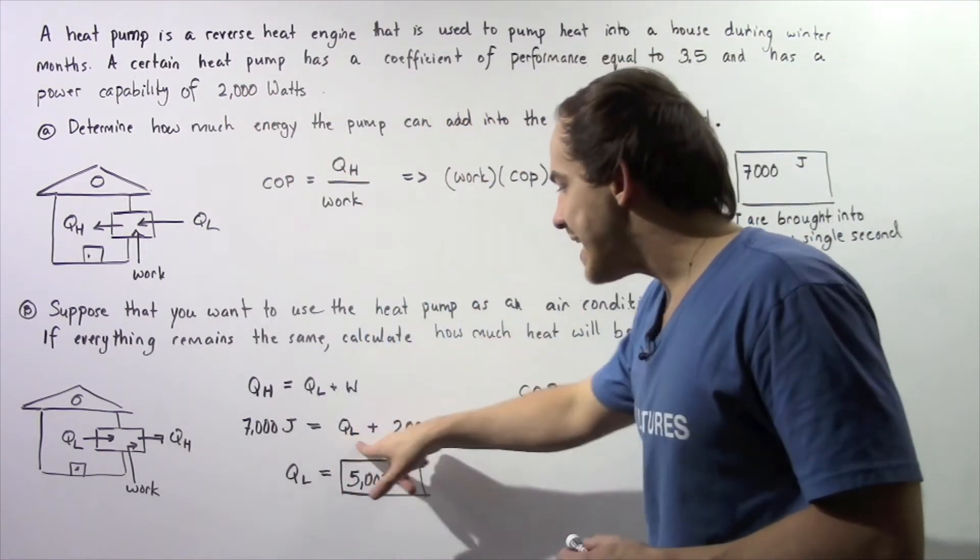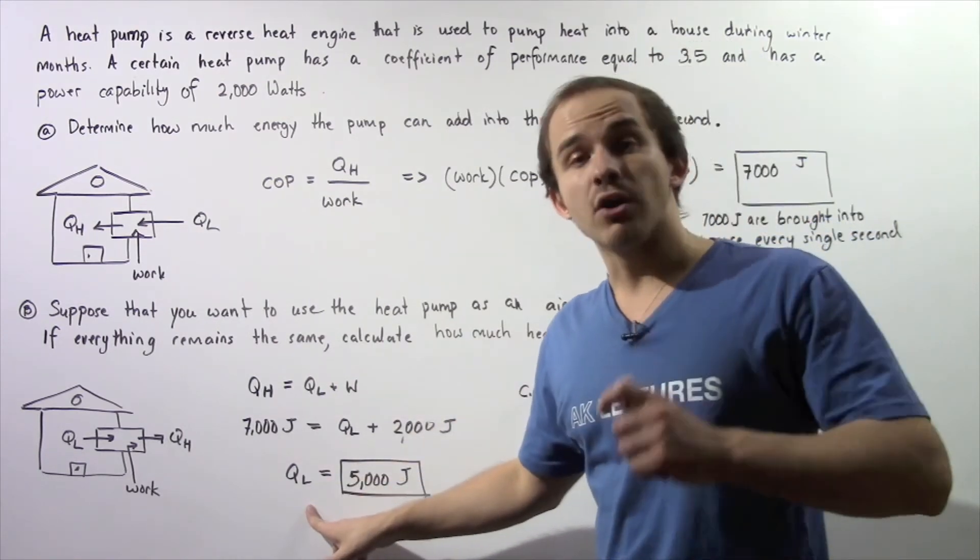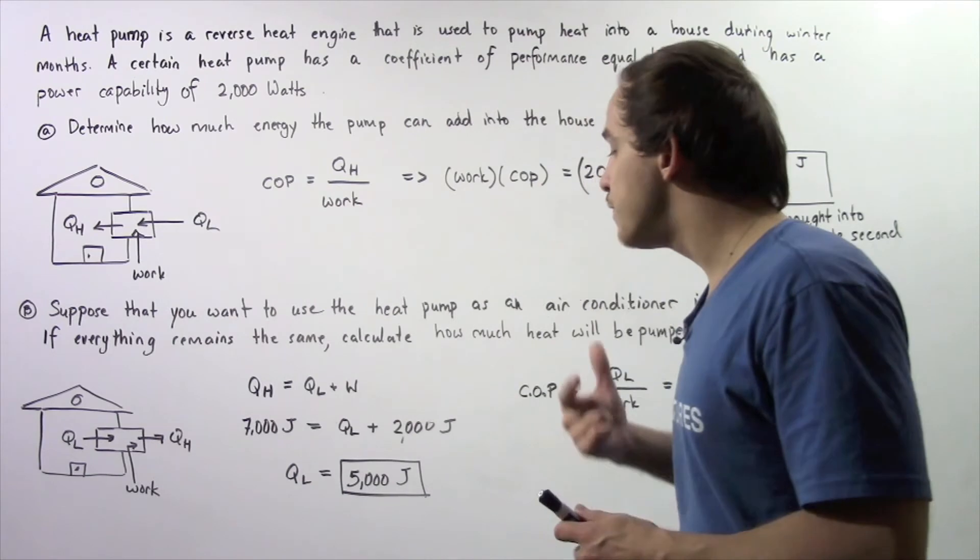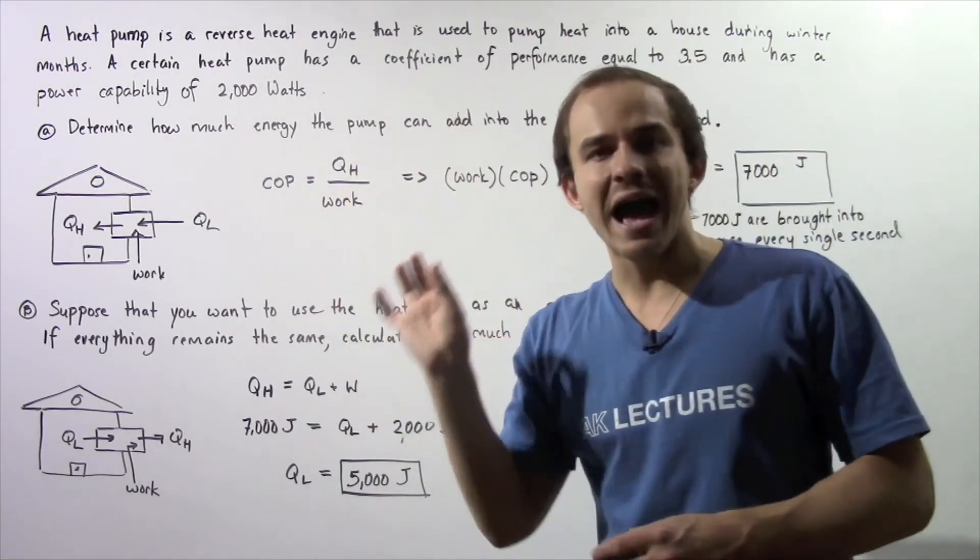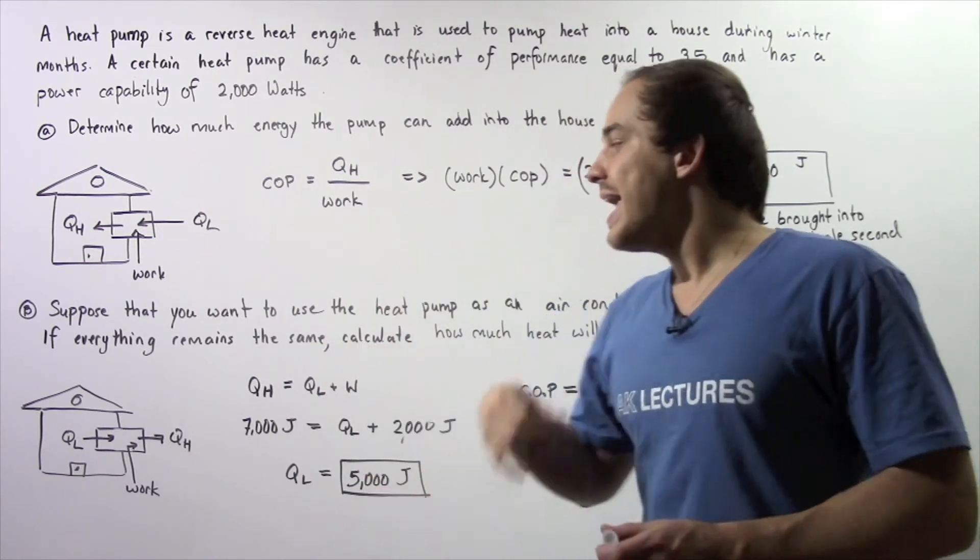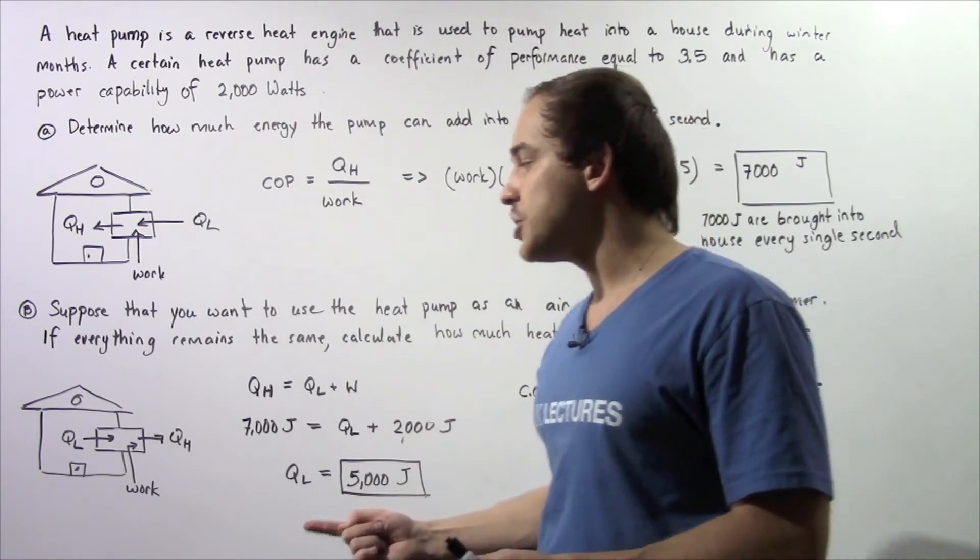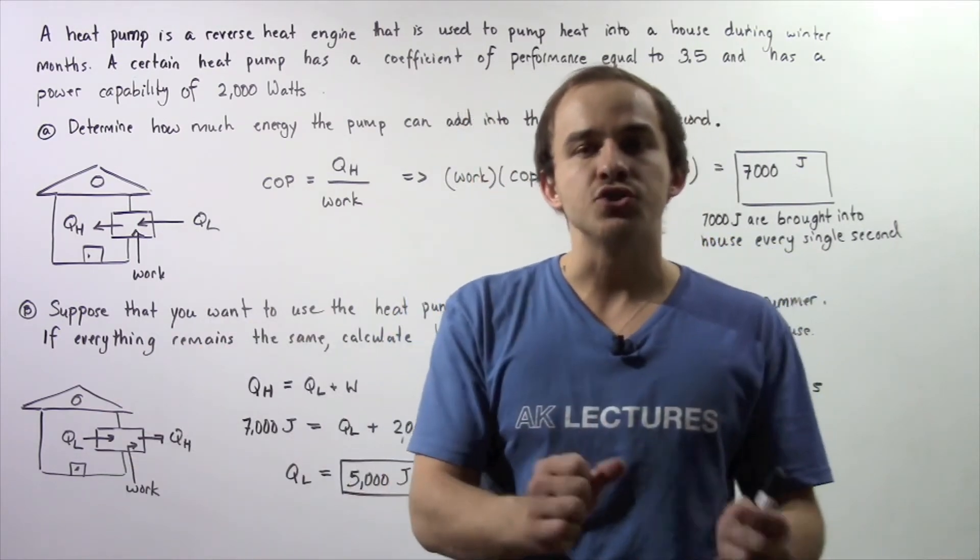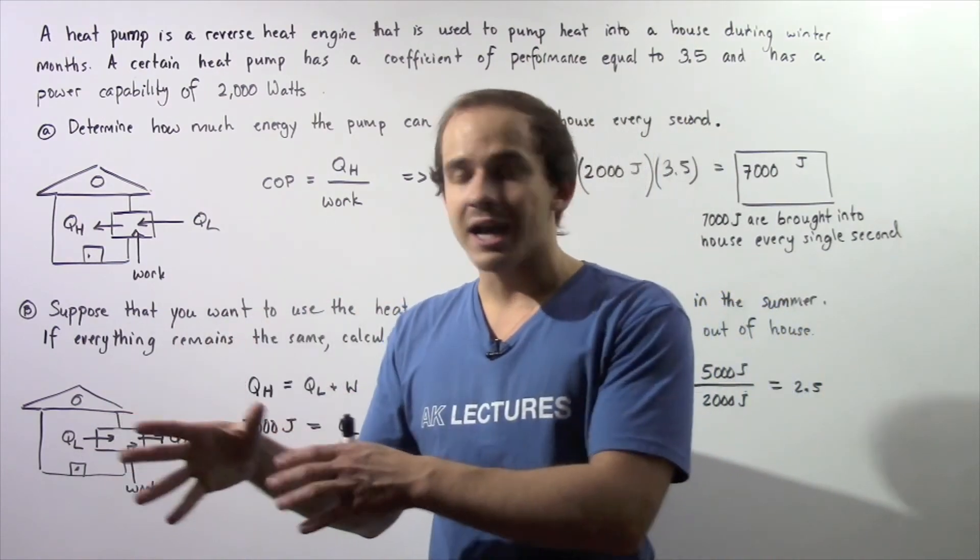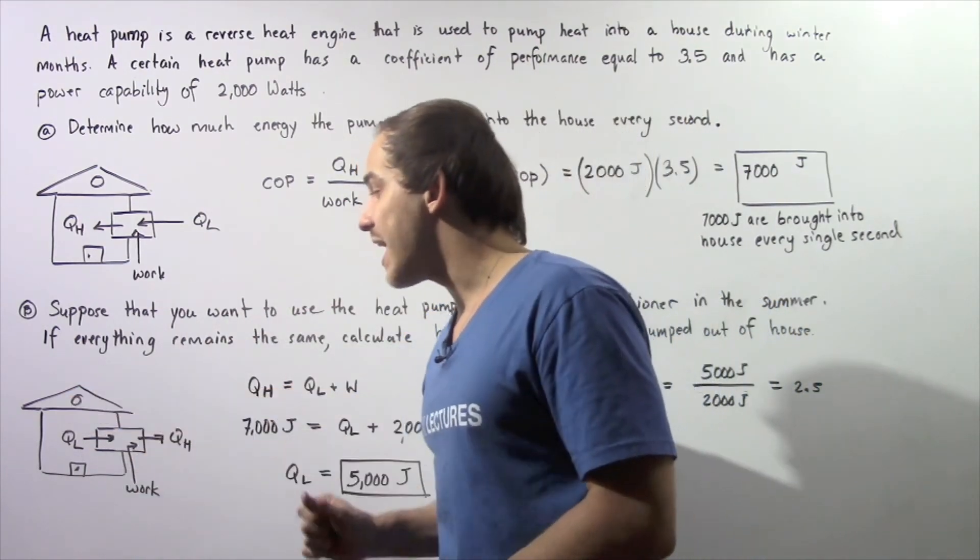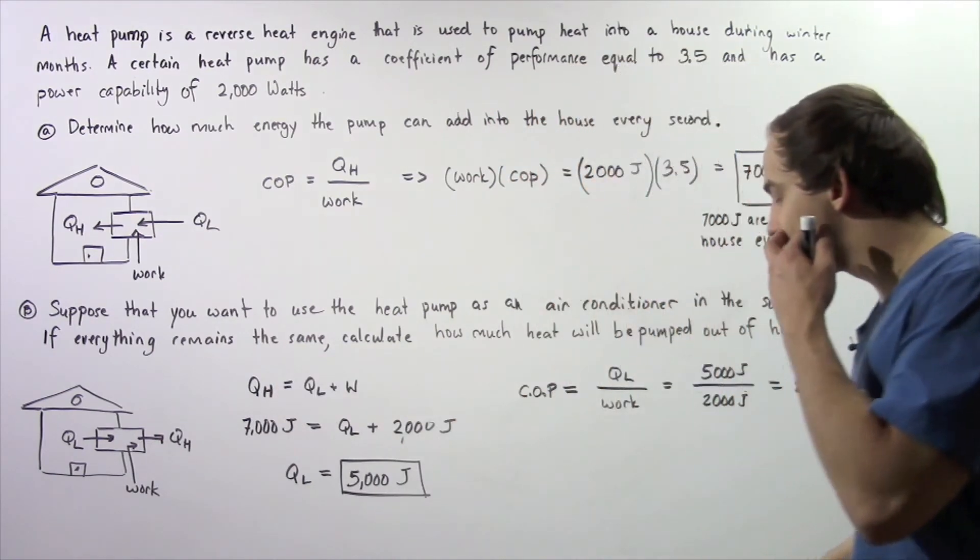We simply take this equation, rearrange it and solve for QL, and our QL is equal to 5,000 joules. That means when this same heat pump acts as an air conditioner, it is capable of bringing 5,000 joules of energy from the inside of the house to the outside. Because we're dumping energy to the outside, the temperature of the inside will decrease and the temperature of the outside will increase.